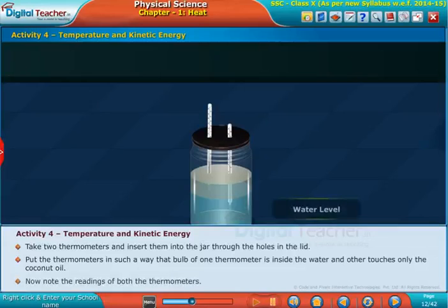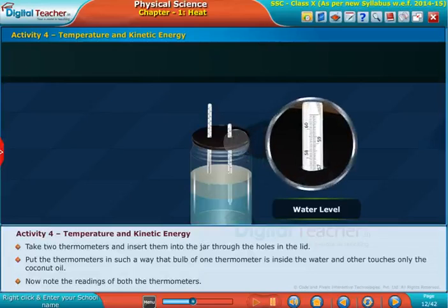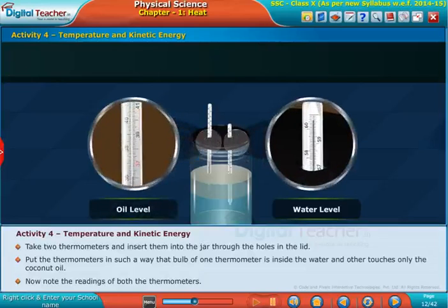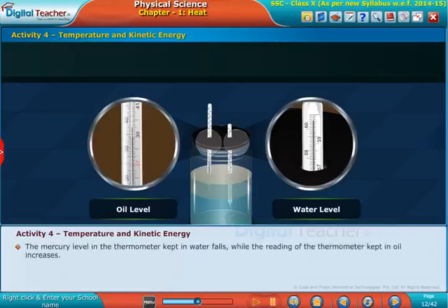Now note the readings of both thermometers. The mercury level in the thermometer kept in water falls, while the reading of the thermometer kept in oil increases.